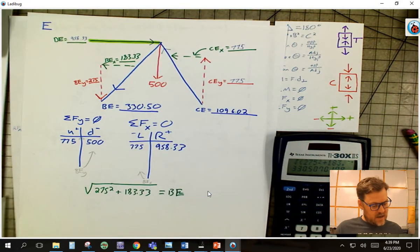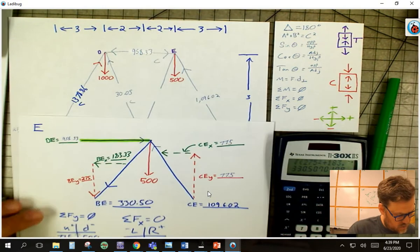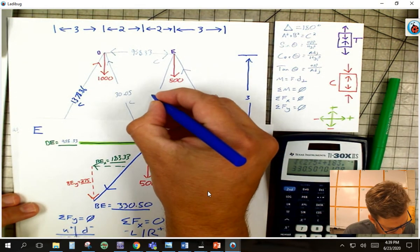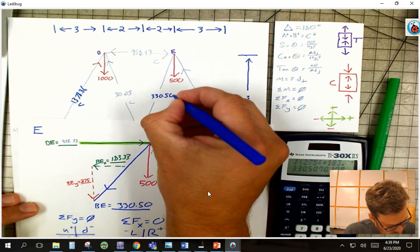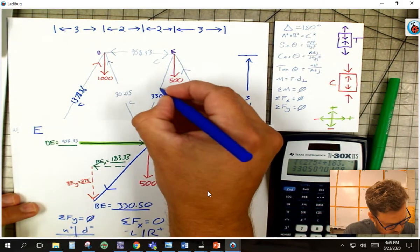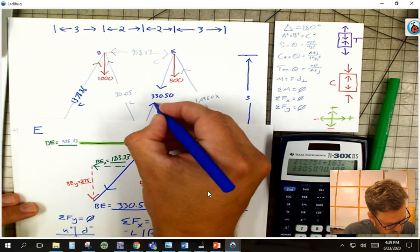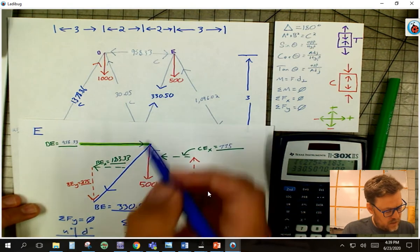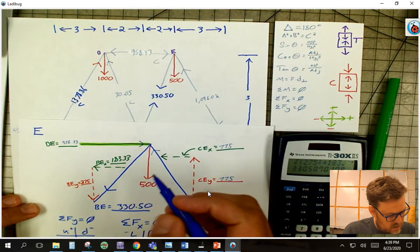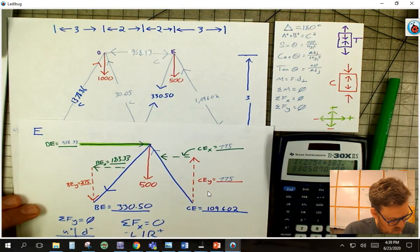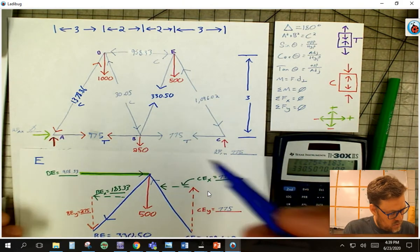Now, the only thing I have left to do is to transpose those numbers back over to my chart. This guy's 330.50. This arrow is pointing this way, which means this one is pointing that way. And when I look at that, okay, and I say, when I look at that, what is going on there?